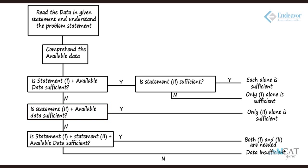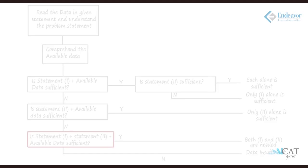Now, if both statements are not sufficient individually, we combine both of them together. We use the data from both statements together and ask: is it giving us the required answer, or are we reaching an endpoint? If yes, we mark the third option. If not, we mark yet another option.